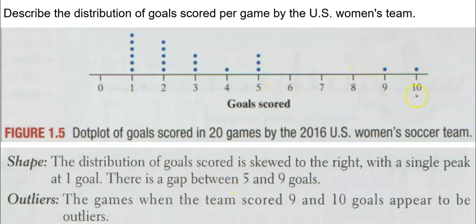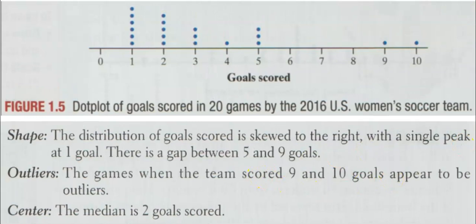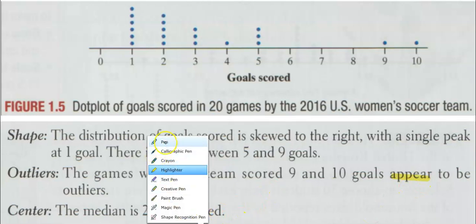That's the shape. The games when the team scored nine to ten goals appear to be outliers. Notice I said appear.